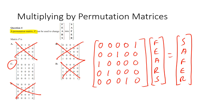To recap: the position of the 1 in a given row of the permutation matrix tells you which letter from the original word will appear in that position of the new word. For example, a 1 in the fourth column of the second row means the second letter of the output is the fourth letter of the input.